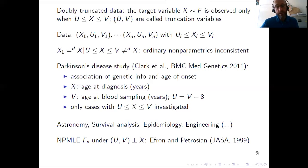And under independence between the truncation limits and the variable of interest X, Efron and Petrosian in the JASA paper in 1999 introduced the non-parametric maximum likelihood estimator Fn for F. And in a sense this Fn is a correction of the ordinary empirical cumulative distribution function to take the double truncation into account.